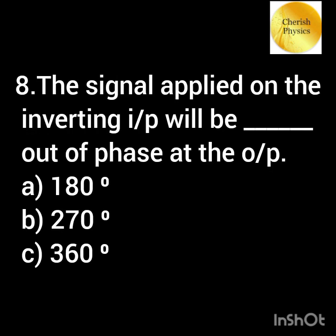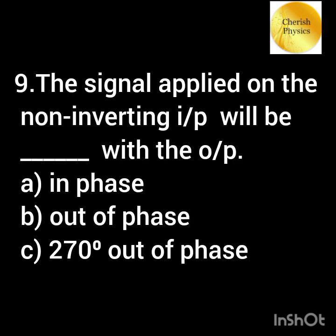The signal applied on the inverting input of an operational amplifier will be dash phase at the output. The signal applied on the non-inverting input of an operational amplifier will be dash with the output.